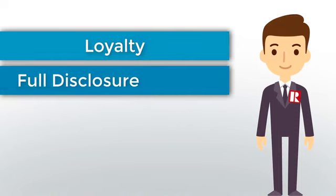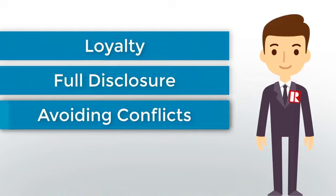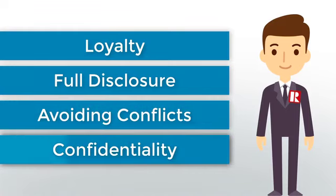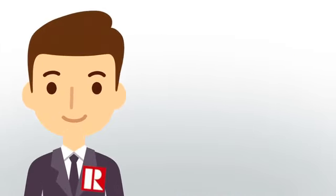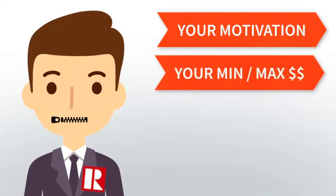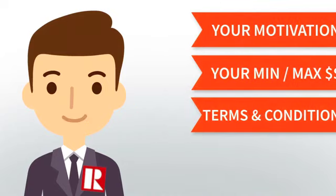Full disclosure: your agent must tell you everything they know that might influence your decision in a transaction. Avoiding conflicts of interest: your agent must avoid any situations that would affect their duty to act in your best interests. Confidentiality: your agent must not reveal your private information without your permission, even after your relationship ends. That includes your reasons for buying or selling, your minimum or maximum price, and any preferred terms and conditions you may want to include in a contract.